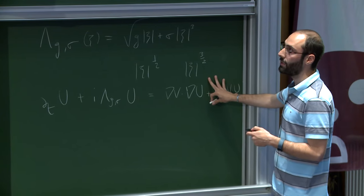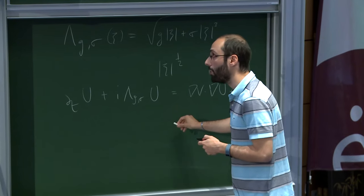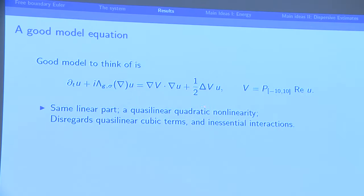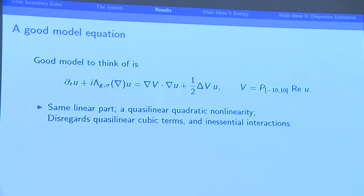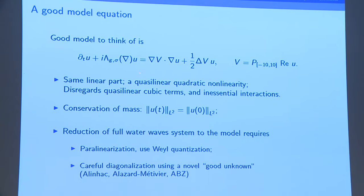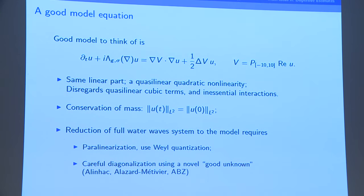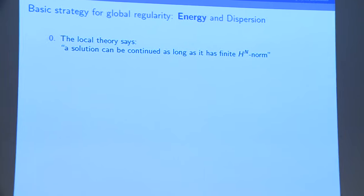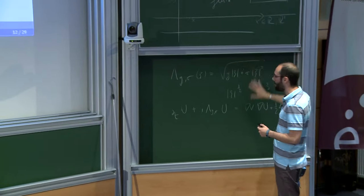A good model to think about, if you don't want to think of the full water waves equation, is to take just the linear equation and add a quadratic non-linearity of the form (du)^2. This model has the same linear part and a quadratic quasi-linear non-linearity — you disregard interactions that are not so relevant, and cubic terms. To reduce to this from the water waves equations, you have to use para-linearization in the way Alazard-Baldi-Zuily used it with Weyl quantization, diagonalize the equation, and use the good unknown of Alinhac. So you can concentrate on such an equation: a linear part just like a Schrödinger equation with a different dispersion relation, and some quadratic non-linearity.